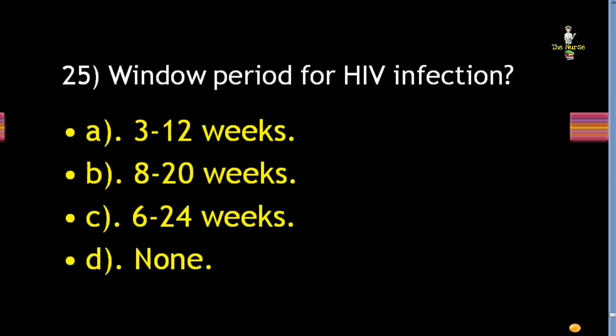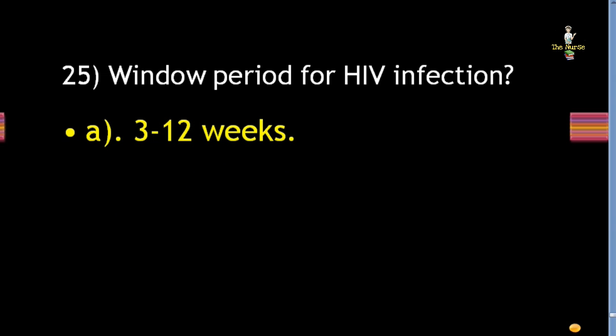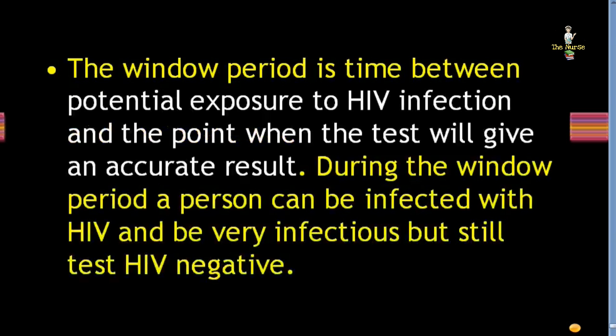Next question: window period for HIV infection is 3 to 12 weeks, 8 to 20 weeks, 6 to 24 weeks, or none of these? Correct answer is 3 to 12 weeks. The window period is the time between potential exposure to HIV infection and the point when a test will give an accurate result. During the window period, a person can be infected with HIV and be very infectious but still test HIV negative.